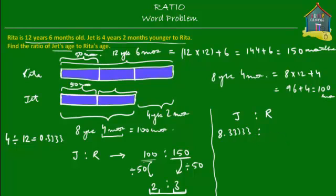How about Rita's age? Well Rita is 12 years and 6 months. Now 6 months we know is half a year, so half means 0.5, right? So Rita's age is simply 12.5 years.